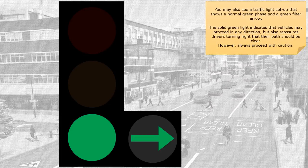You may also see a traffic light setup that shows a normal green phase and a green filter arrow. The solid green light indicates that vehicles may proceed in any direction, but also reassures drivers turning right that their path should be clear. However, always proceed with caution.